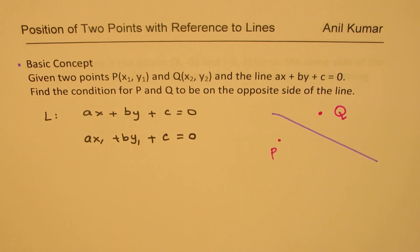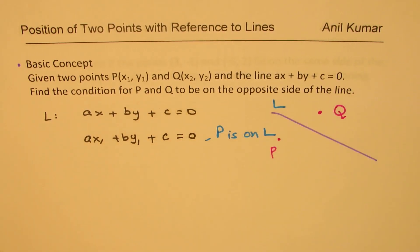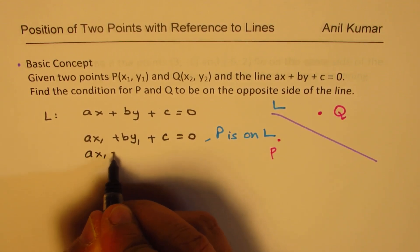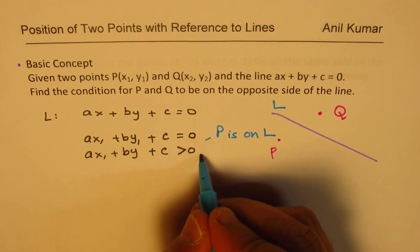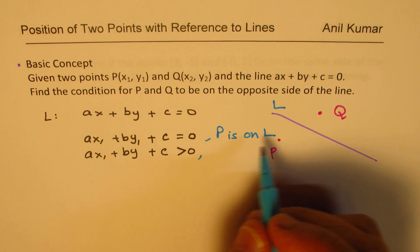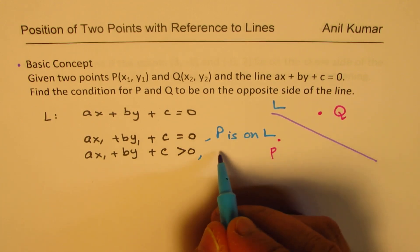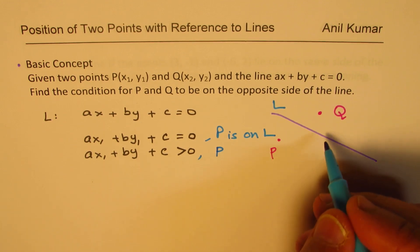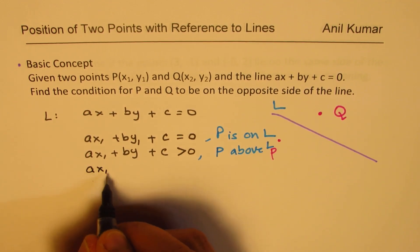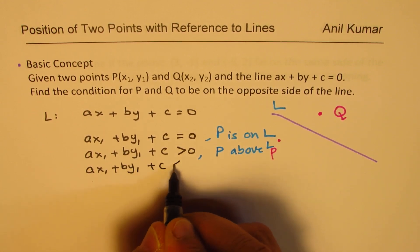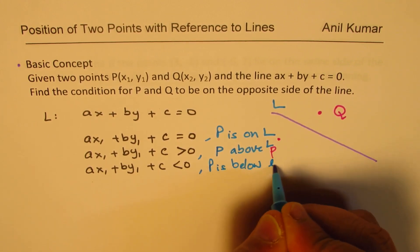If substituting point P gives Ax1 + By1 + C > 0, that means P is on the right side — or above — line L. If the result is Ax1 + By1 + C < 0, then as shown, P is below line L. So the value of this function decides whether the point is on the line, above the line, or below the line. The same principle applies to point Q.